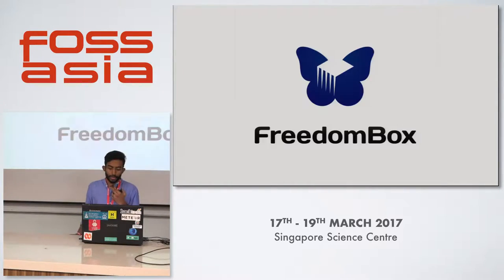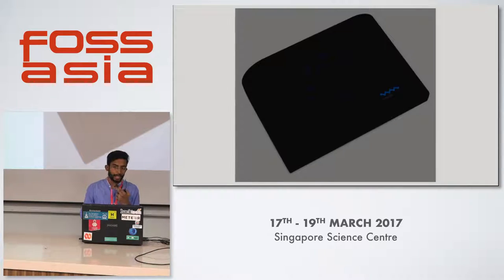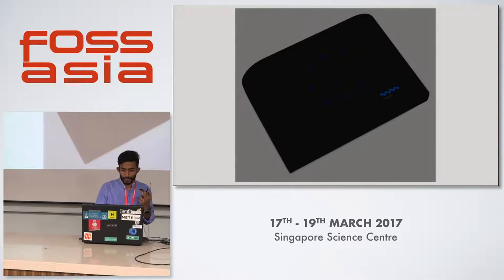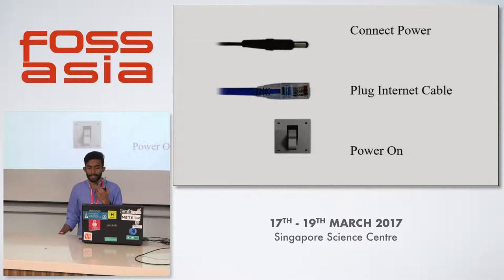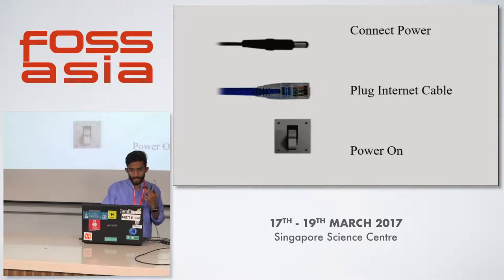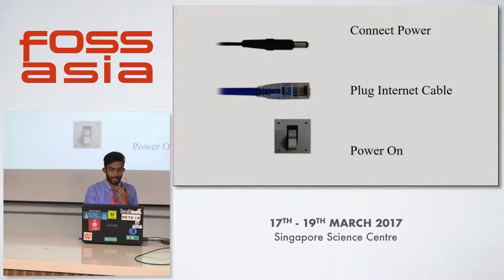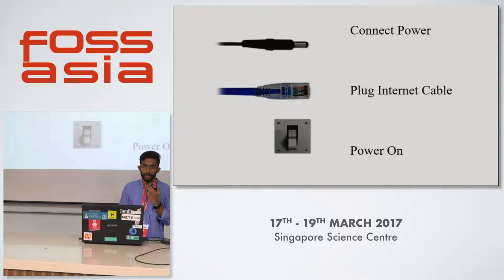FreedomBox is a Debian blend and it can be installed on any single board computer. This is a commercial version of FreedomBox. The setup is so simple it can be done even by non-technical people. You just need to connect the power supply, connect an internet cable, and power on. You'll get a hotspot at your home and can access its services.